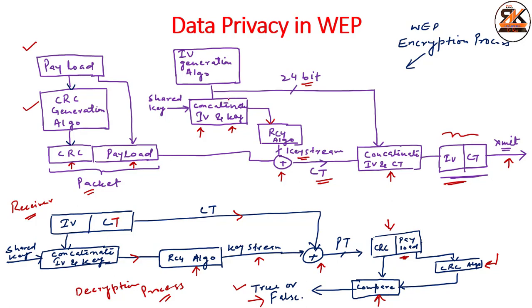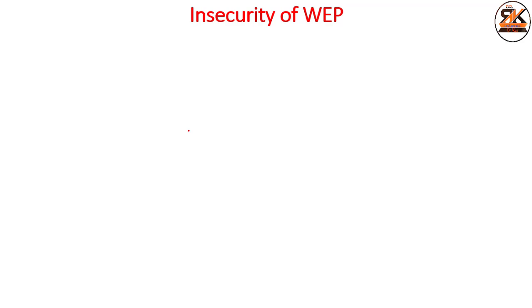Unfortunately, the 802.11 standard does not identify any means of key management or key distribution, so we are not sure how the key is managed and distributed. Next, let us look at the insecurities of WEP. Although WEP provides security and keeps data private, there are certain insecurities in this standard.